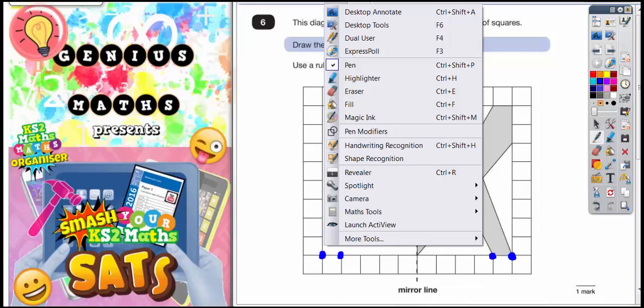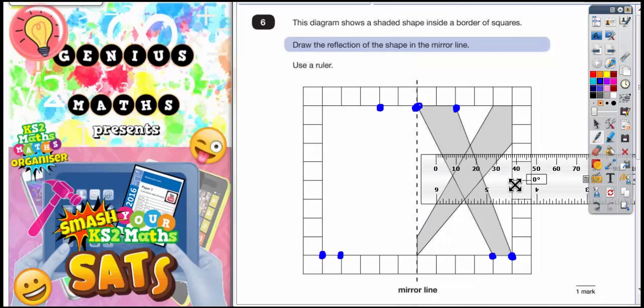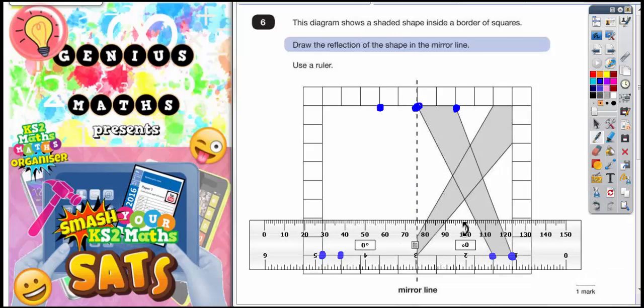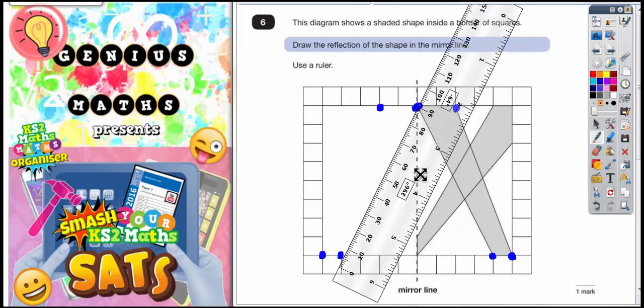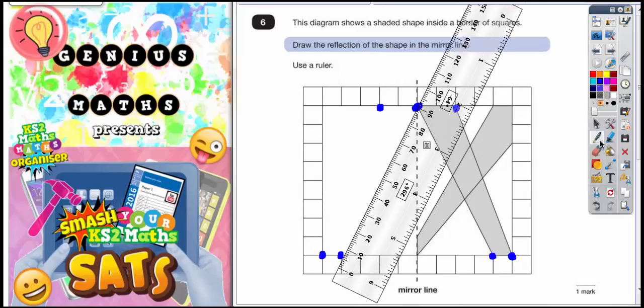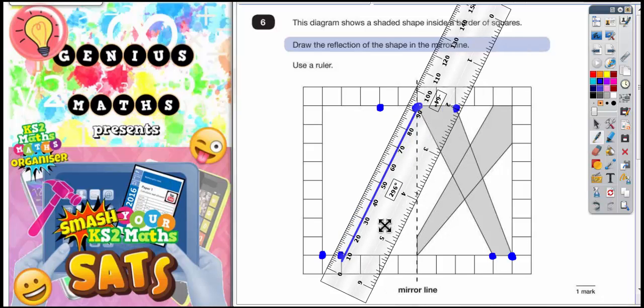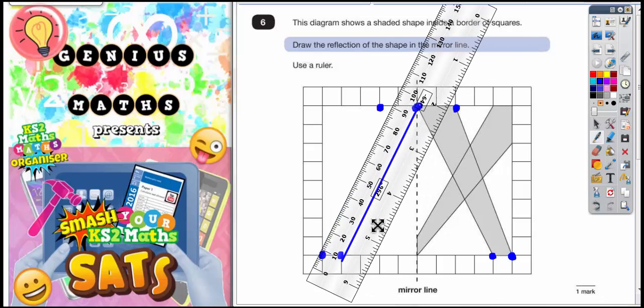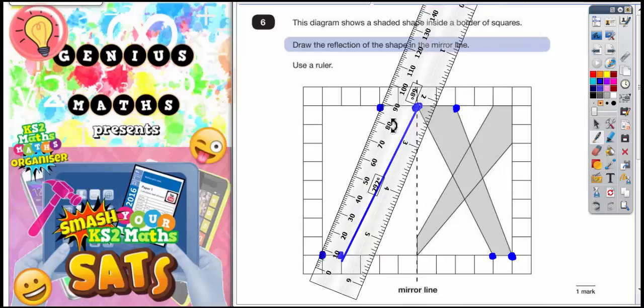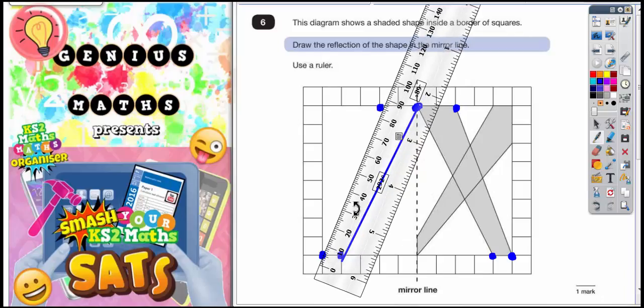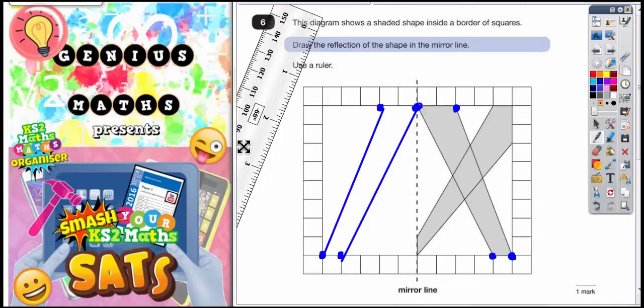All you've got to do now is get your ruler. So if we get a little ruler up we can start joining them up. So let's put that on there so we can join those two points together and we can also join these two points. It's a bit awkward to do this with the board tools. Obviously you would hopefully be finding this a bit easier with an actual ruler on a piece of paper.